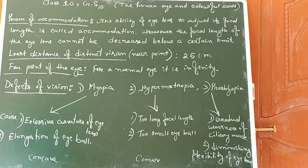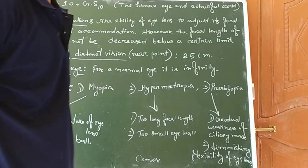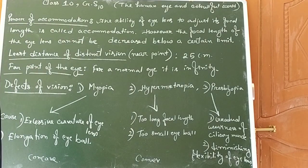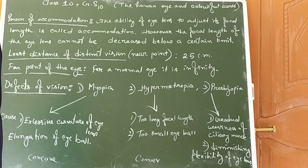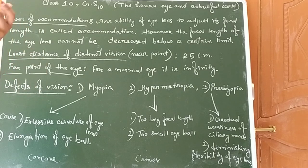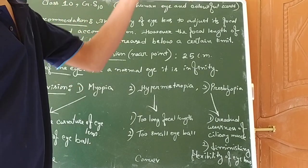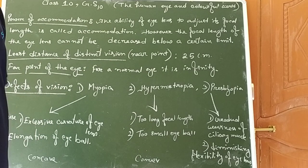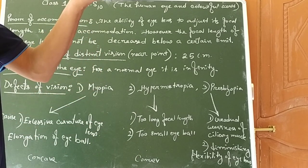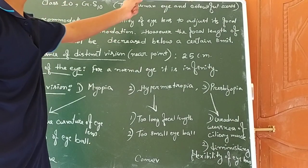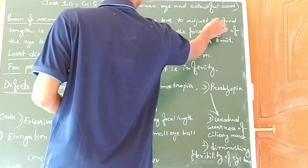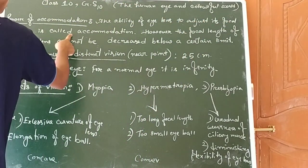Now we are going to study what is the power of accommodation. The power of accommodation is an ability of the lens. The lens has an ability to adjust its own focal length to see an object, whether it is a nearer object or a distant object. Our eyes adjust their focal length. This ability of the lens to adjust its focal length is called accommodation.